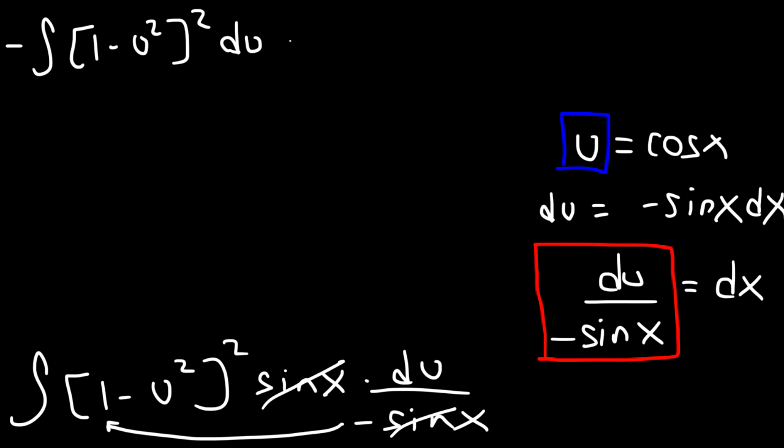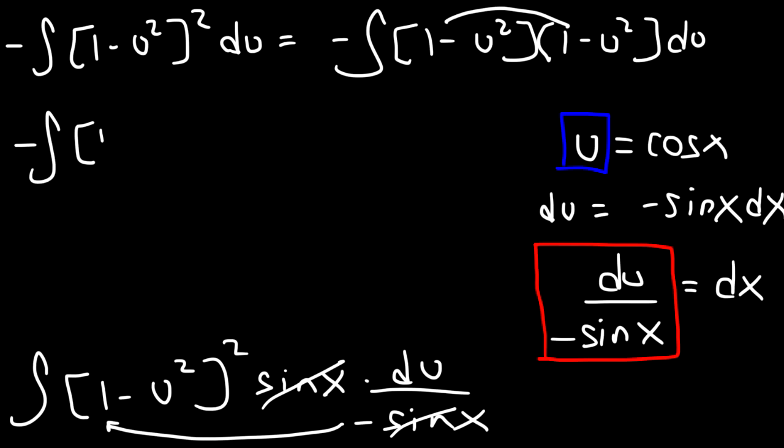So what I now have is -∫(1 - u^2)^2 du. Now what we need to do is FOIL. But first, I'm going to write the expanded form of this integral. So we have 1 times 1, which is just 1. And then it's going to be 1 times -u^2, which is just -u^2. -u^2 times 1 is the same. And then -u^2 times -u^2. That's positive u^4.